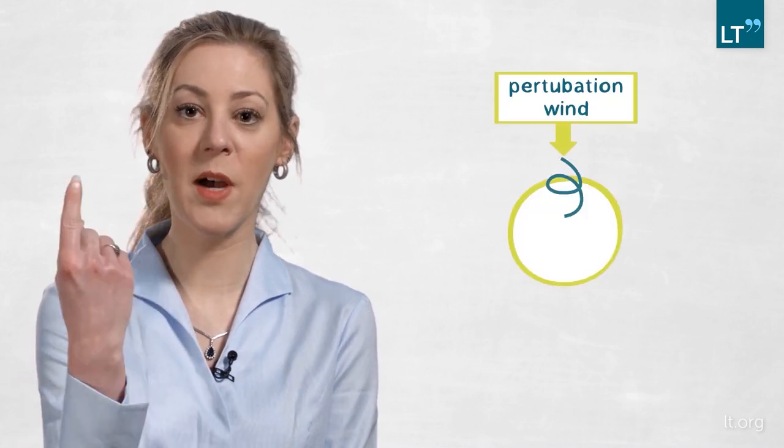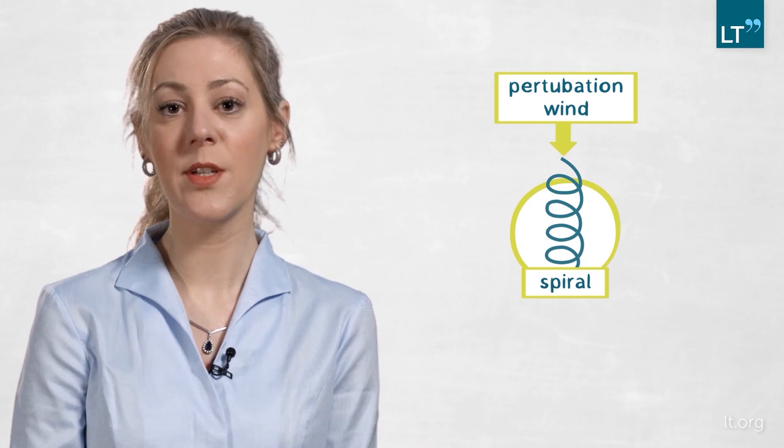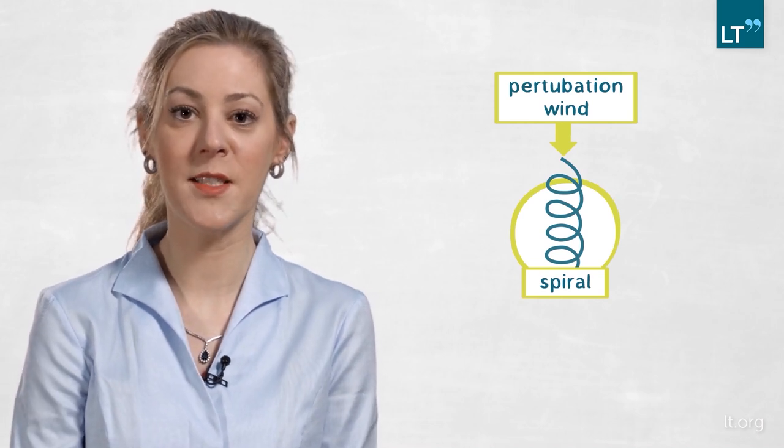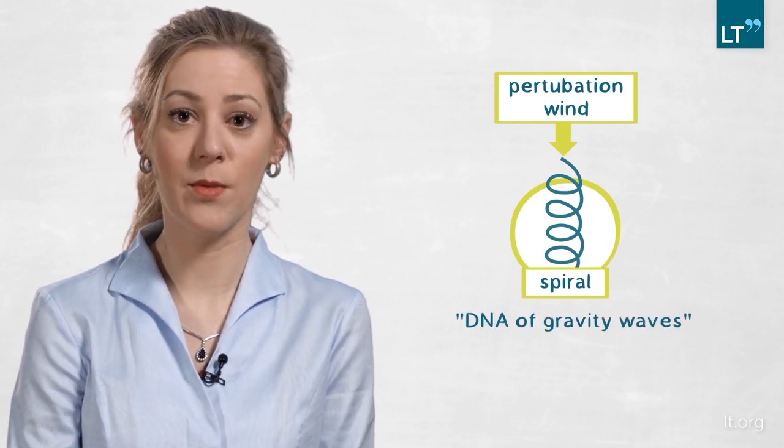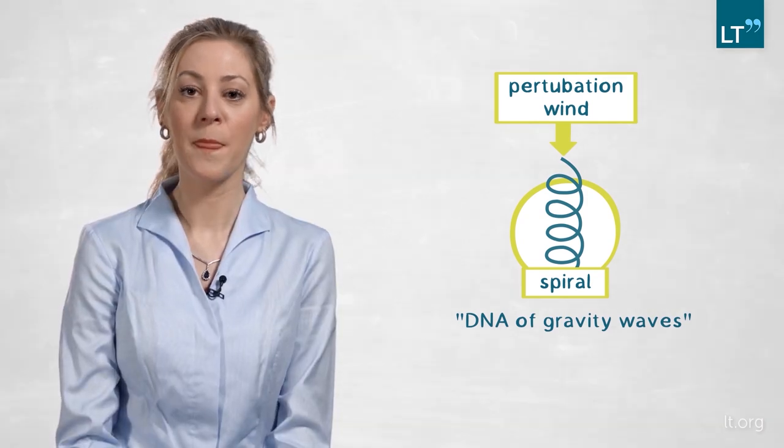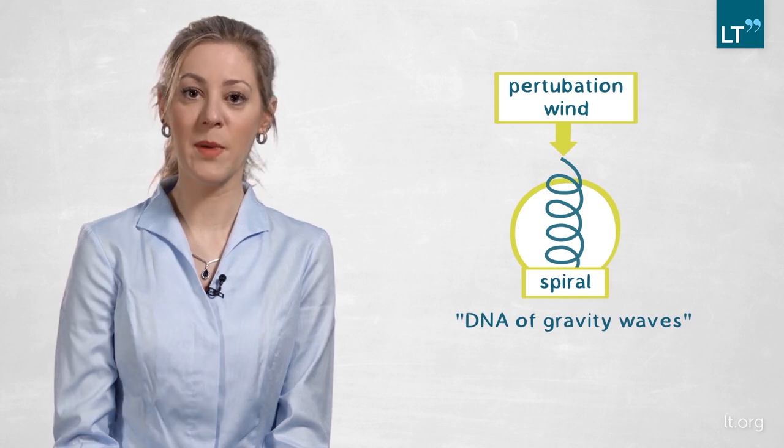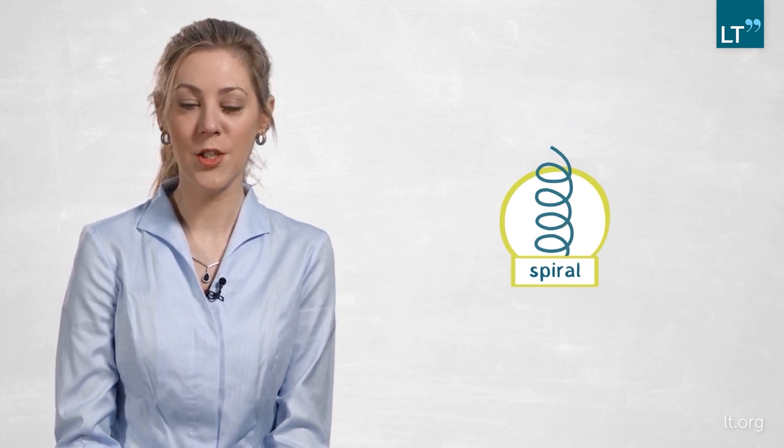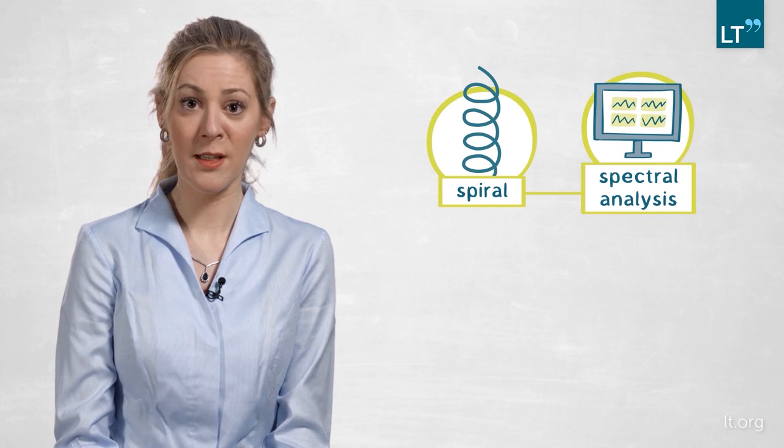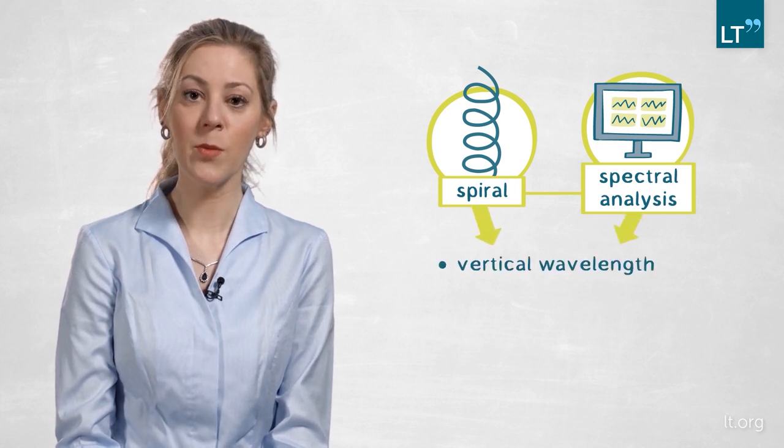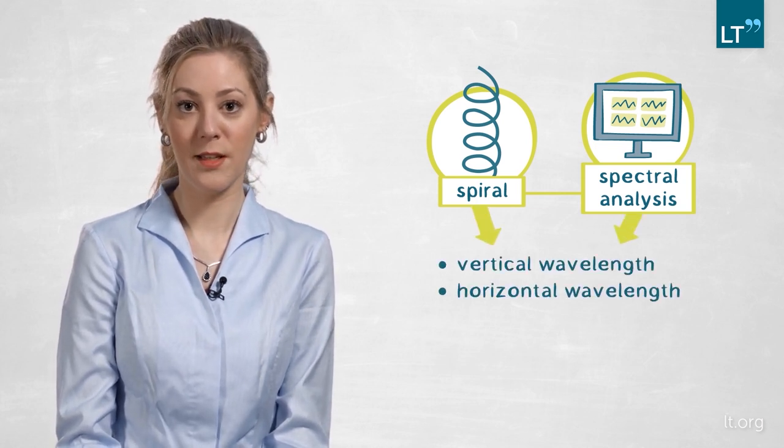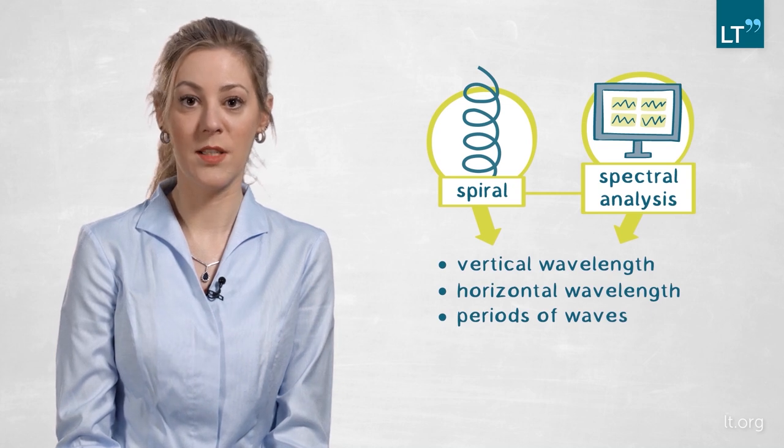The perturbation wind associated with low-frequency gravity waves has a unique property, and that is that it describes a spiral with height. And you can think of the spiral very much as the DNA of gravity waves. So what we do is to determine in a statistical way the mean properties of the spiral. And this, in combination with a standard spectral analysis, tells us the vertical wavelength, the horizontal wavelength, and the periods of these waves.